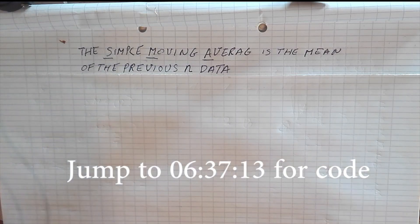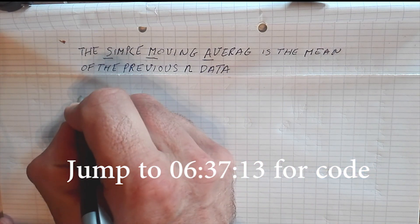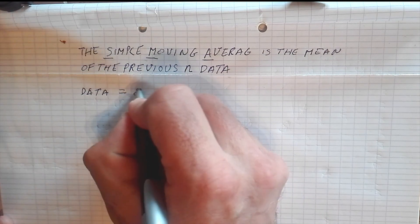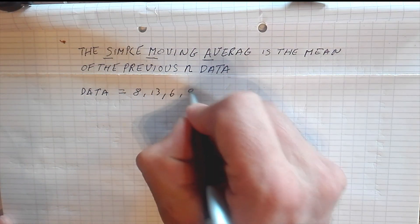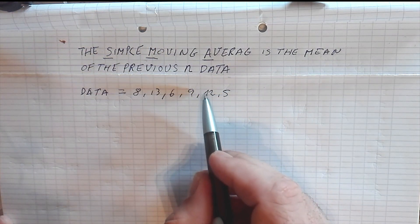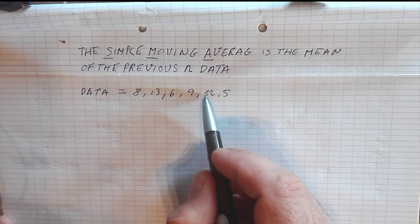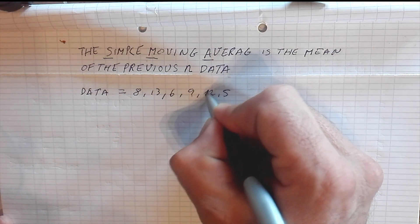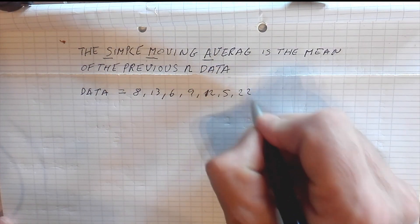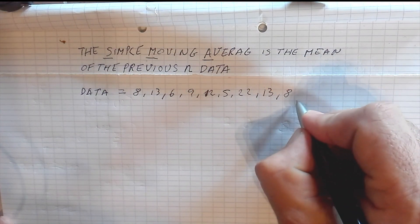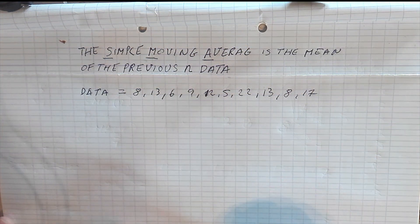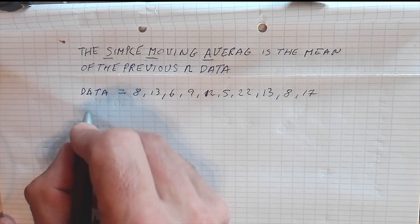Hey, what's up everyone! Today we will make a JavaScript function to calculate the SMA — the Simple Moving Average. So how does a Simple Moving Average work? It's very simple. For example, we have an array of data with the numbers 8, 13, 6, 9, 12, 5 — by the way, this is how I learned in school, many people confuse it with a 7, but that's actually a 1. Then 22, 13, 8, and 17. Now if you want the SMA, the Simple Moving Average...